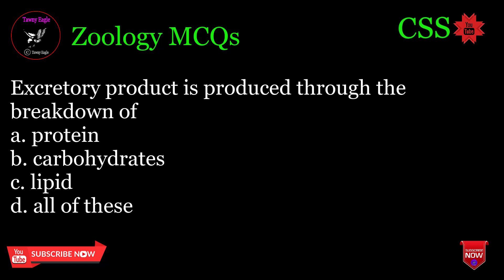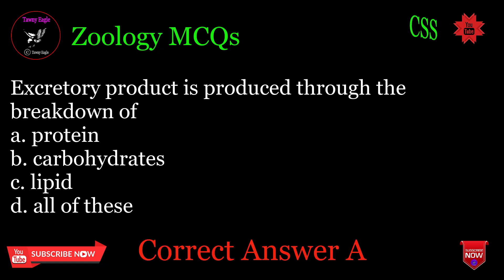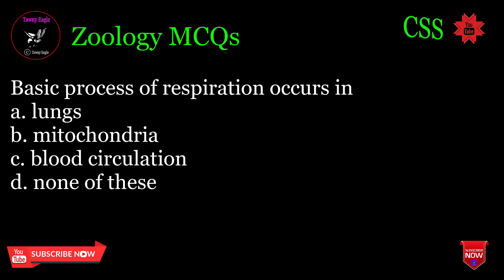Excretory product is produced through the breakdown of: A. Protein, B. Carbohydrates, C. Lipid, D. All of these. Correct answer: A.